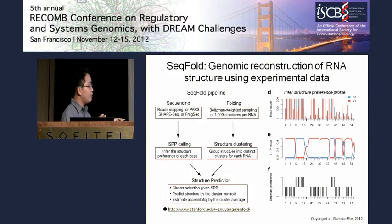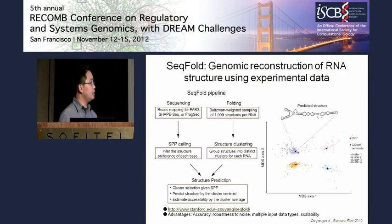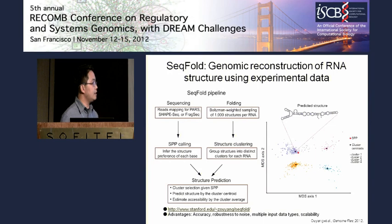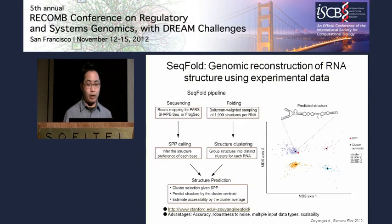Rather than constraining the folding algorithm, we let it sample a Boltzmann-weighted average of essentially a thousand different structures. We ask which are over-represented in a statistically meaningful fashion, then cluster these structures — shown here in a two-dimensional principal components plot — into families of structures. We ask which centroid is closest to what we determine by experiment. This algorithm has several advantages: accuracy, robustness to noise, it can take multiple input data types, and it can scale genome-wide in a computationally efficient way.